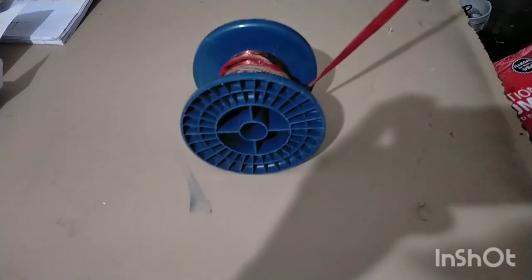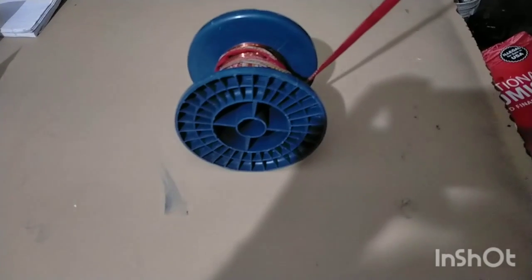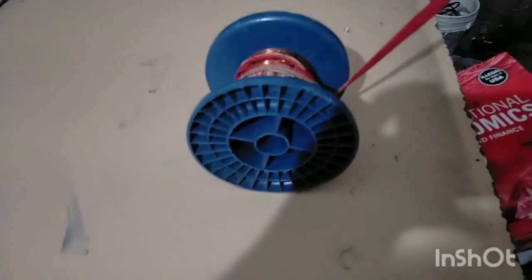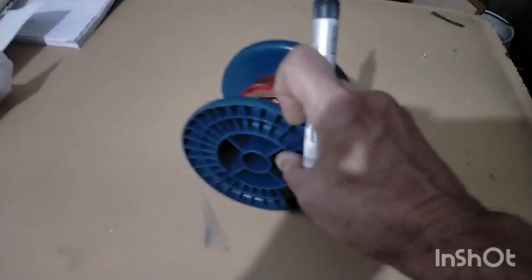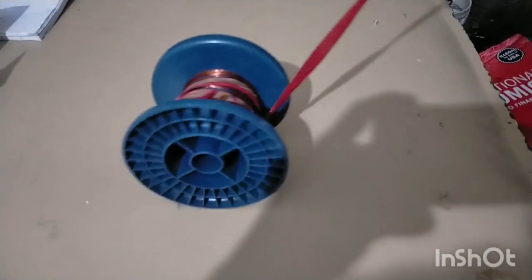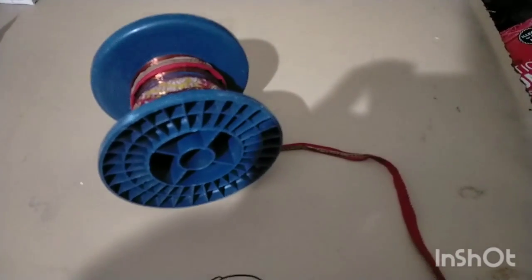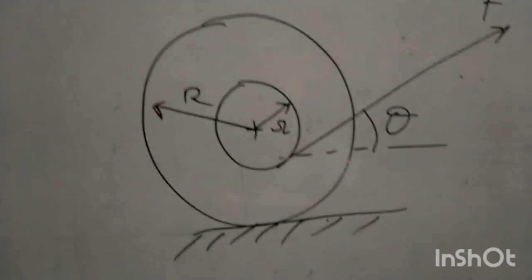There is one particular angle — theta critical, which is 60 degrees in my case — at which the spool is just stable. If I increase the force slightly at this angle it starts sliding. In the other two cases there is pure rolling: increasing the angle gives pure rolling backwards, and decreasing the angle gives pure rolling forward.